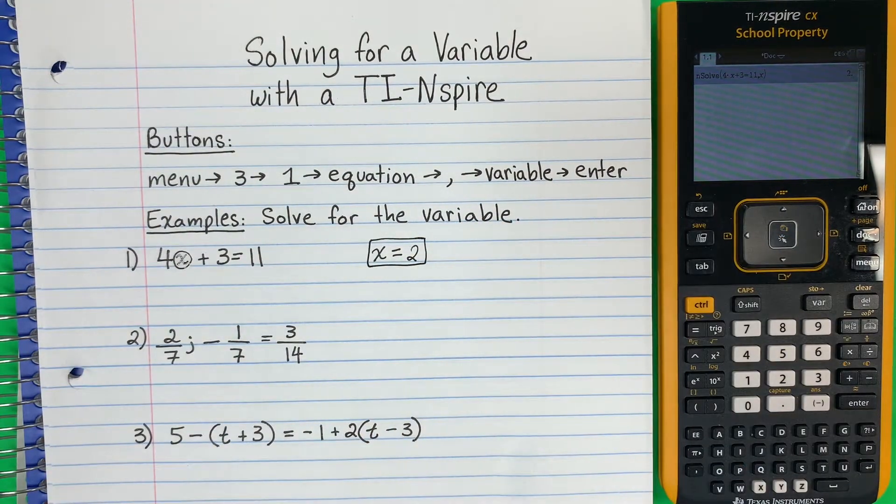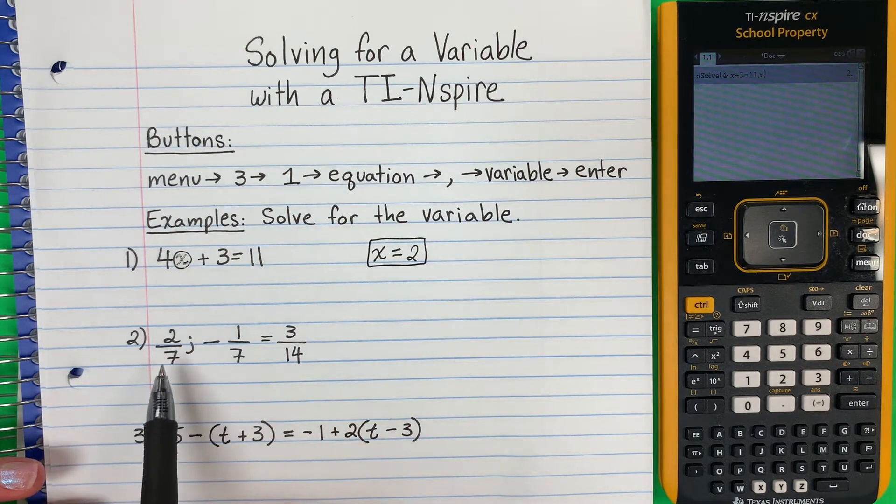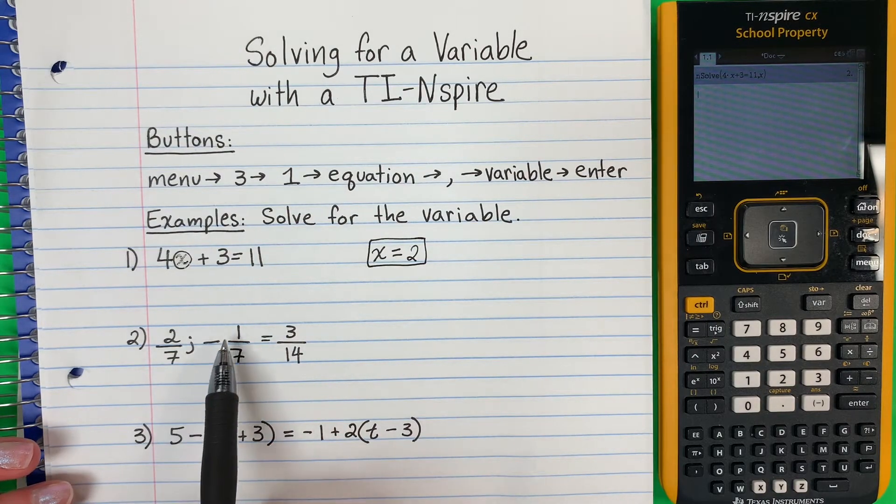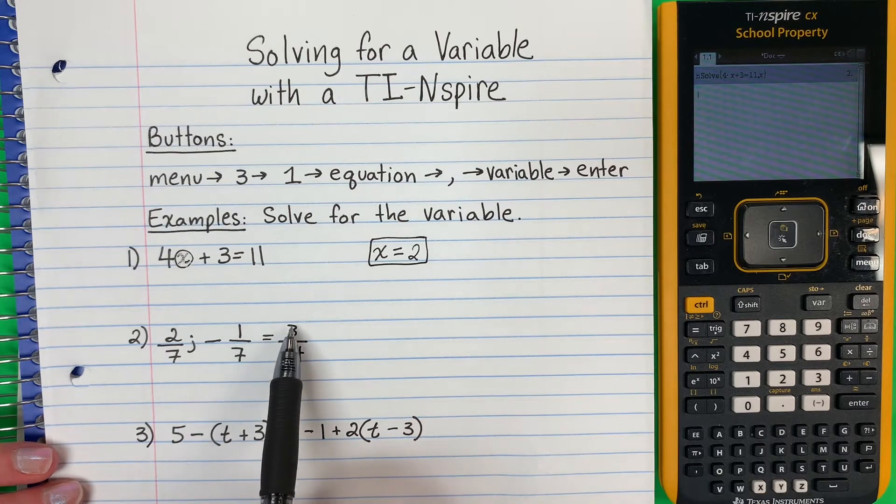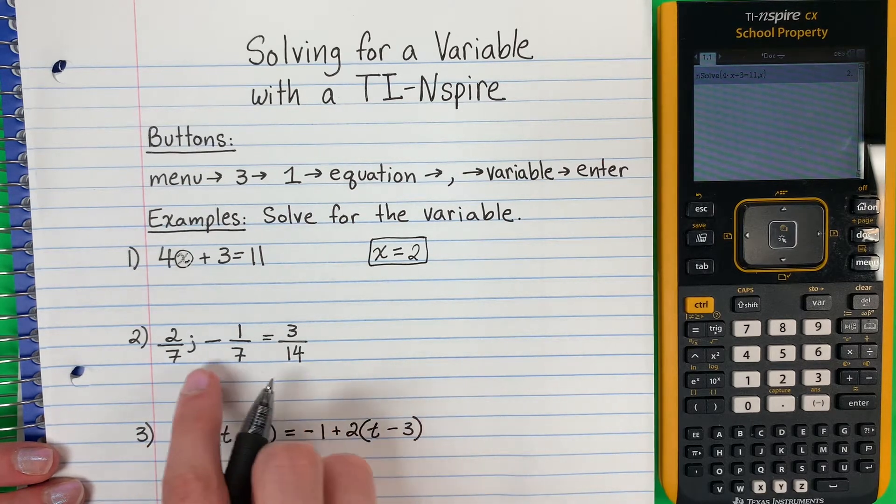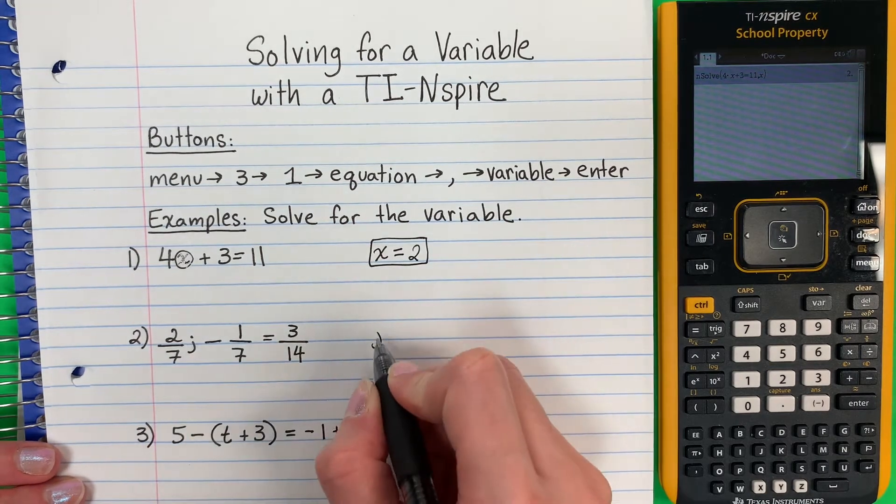Okay, let's go ahead and do another one. Una otra. So number 2, I have 2/7 J minus 1/7 equals 3/14. So what letter is it? ¿Cuál letra es? It's J. So I'm going to put J equals.